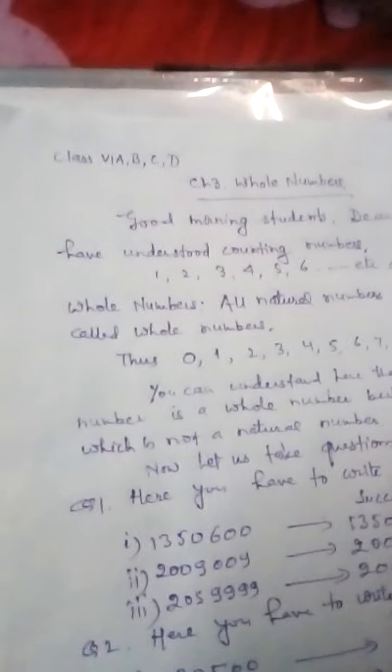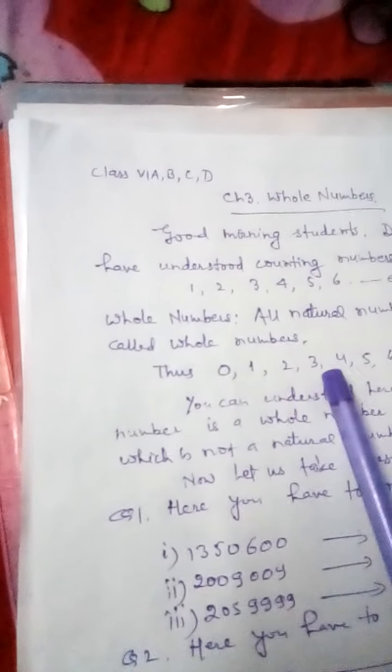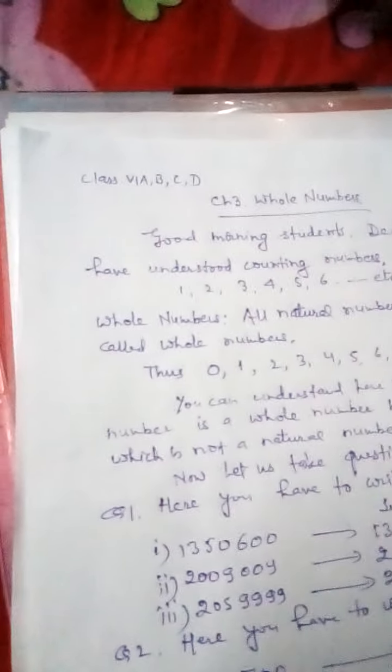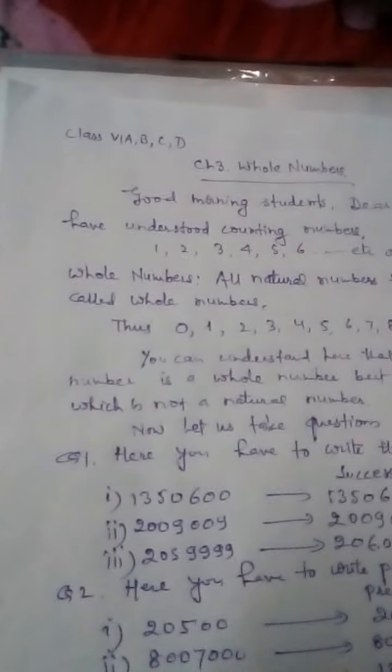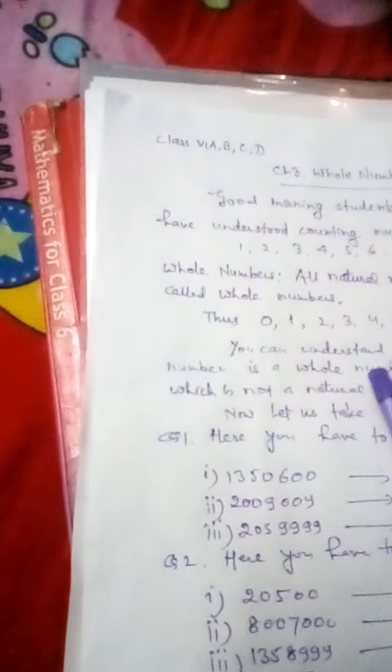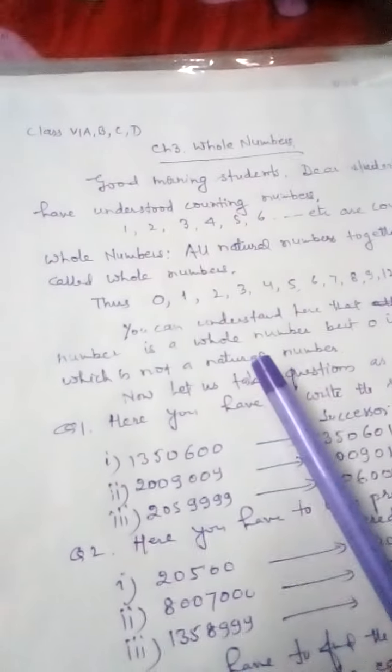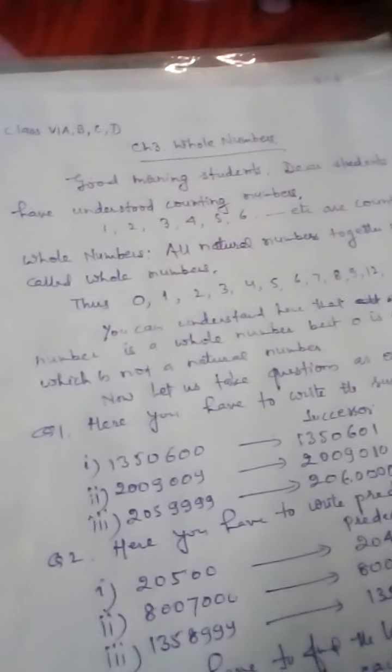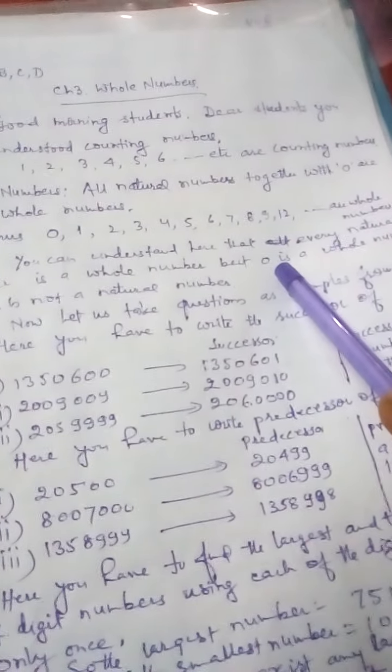Whole numbers - you should know all natural numbers together with zero are called whole numbers. So here 0, 1, 2, 3, 4, 5, 6, 7, etc., all these numbers are called whole numbers. You can understand that every natural number is a whole number, but zero is a whole number which is not a natural number.